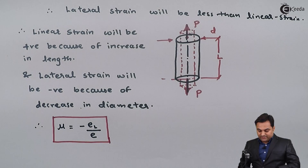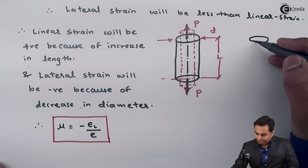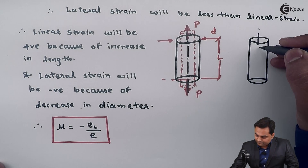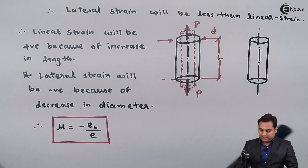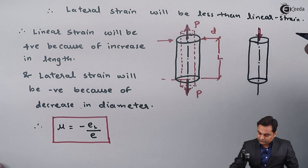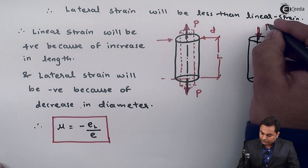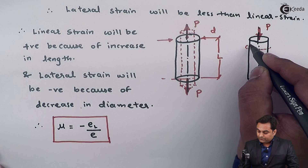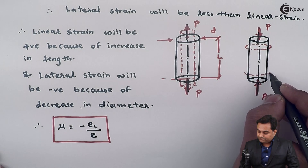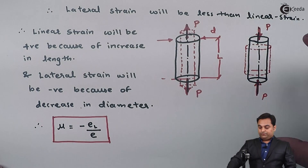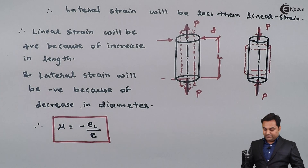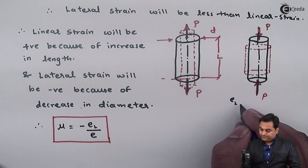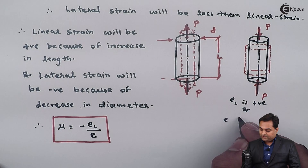Now suppose if I change the direction of the load over this bar — which has the same diameter and length — and instead of a pull type of load, here we have a push type of load of value P. Then because of this, the length will go on decreasing and diameter will go on increasing. So in this case, lateral strain will become positive and linear strain will be negative.